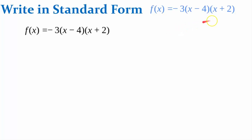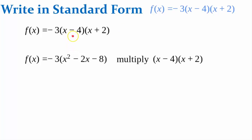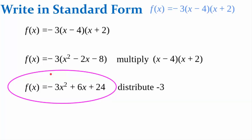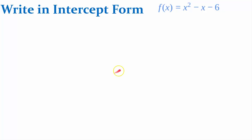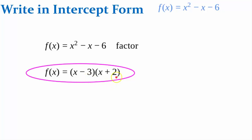We can take anything written in intercept form — also called factored form — and write it in standard form. To do so, multiply x minus 4 times x plus 2, then distribute the negative 3, giving the standard form of the same function: negative 3x squared plus 6x plus 24. We can also take a function in standard form and write it in intercept form by factoring it, giving x minus 3 times x plus 2, where negative 3 times 2 is negative 6 and negative 3 plus 2 is negative 1.